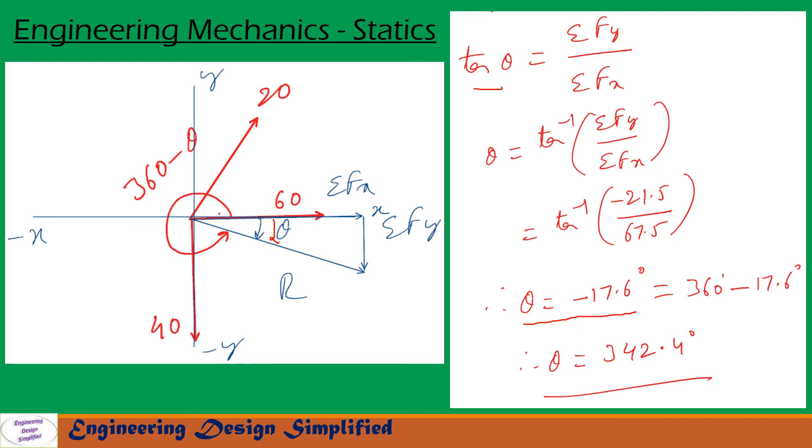So in order to find this angle of the resultant from this horizontal in the counterclockwise direction, we need to substitute that angle theta from 360 degrees. So we get 360 minus 17.6. We get 342.4 degrees.